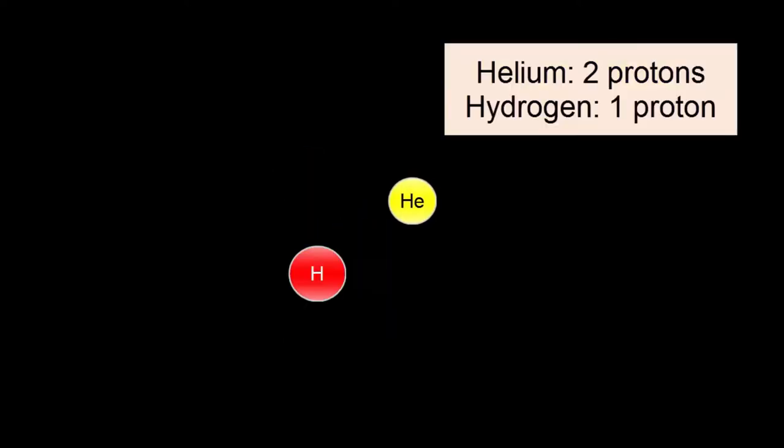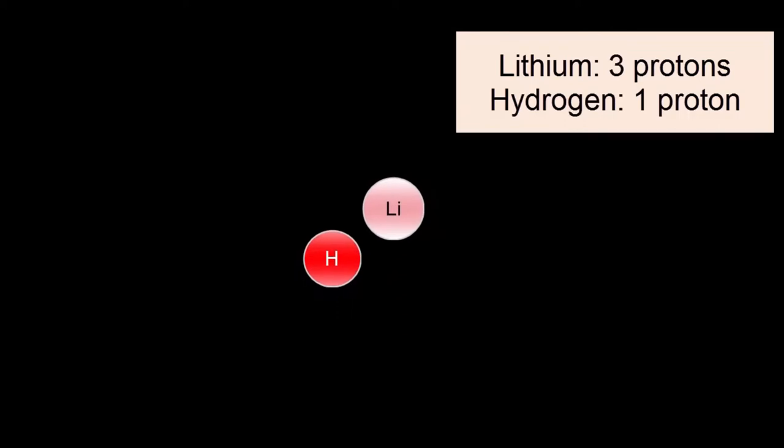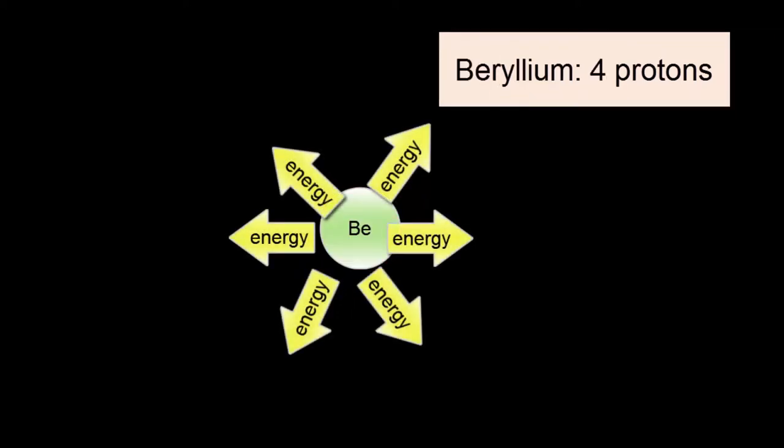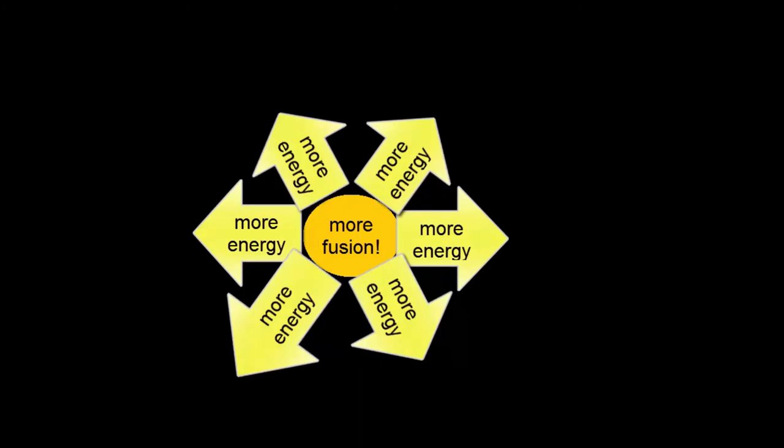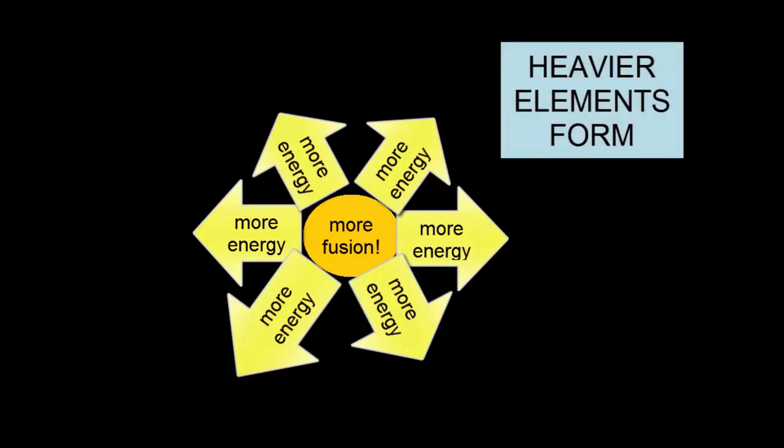But if the star is large enough and hot enough, eventually the hydrogen and helium fuse to produce lithium, three protons in the nucleus. Lithium fuses with hydrogen to produce beryllium, four protons in the nucleus. As more fusion occurs, more energy is produced. As more energy is produced, heavier elements are formed.